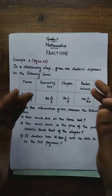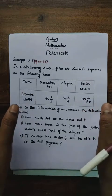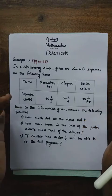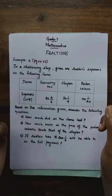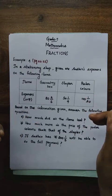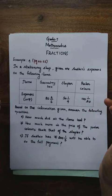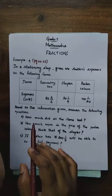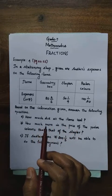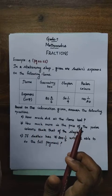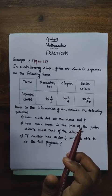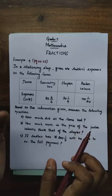Based on the information given, we are going to answer the following questions. The first question is: how much did all the items cost? In the question, they are asking the total cost of all the items.